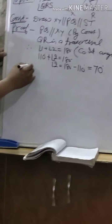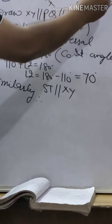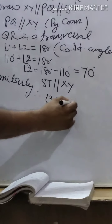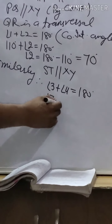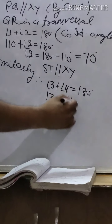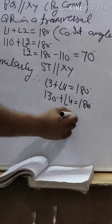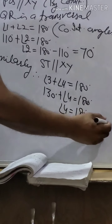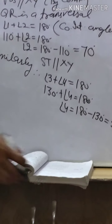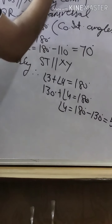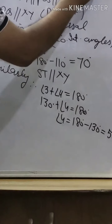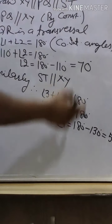Similarly, ST is parallel to XY. So these are also co-interior angles. Angle 3 plus angle 4 is equal to 180 degrees. Angle 3 is given as 130 degrees, and angle 4 is unknown. So angle 4 is equal to 180 minus 130, that is 50 degrees. So angle 2 is 70 degrees and angle 4 is 50 degrees.